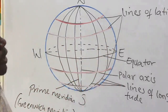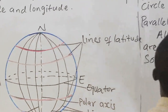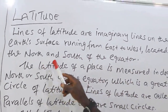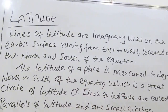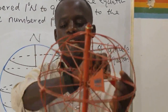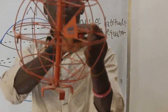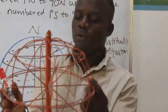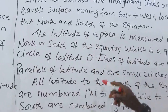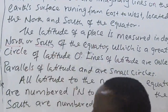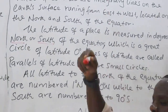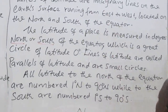Lines of latitude are imaginary lines on the earth's surface running from east to west, located on the north and south of the equator. If you hold the globe, you can see the lines moving from east to west — those are lines of latitude. The latitude of a place is measured in degrees north or south. Anything in degrees north or degrees south means a line of latitude, found above or below the equator, which is a great circle.